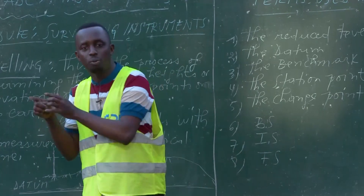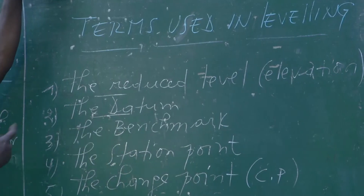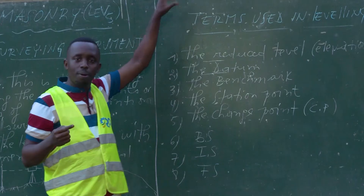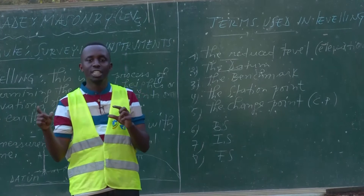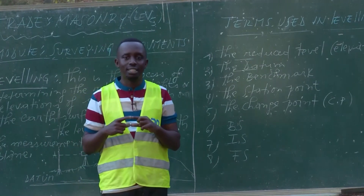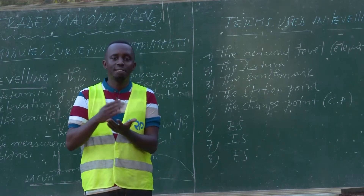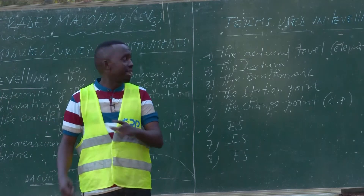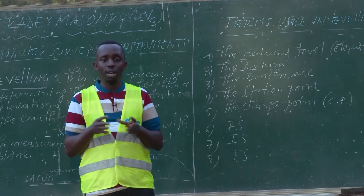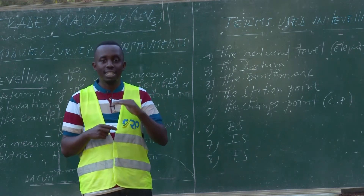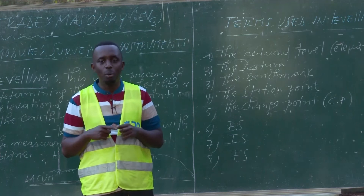The reduced level of a point is the elevation of that point. What about the datum surface? The datum is the level of a point or the level surface to which other levels can be calculated. To calculate the level of other points, the reference is the datum. Generally, the datum which is commonly used all over the world is the mean sea level.